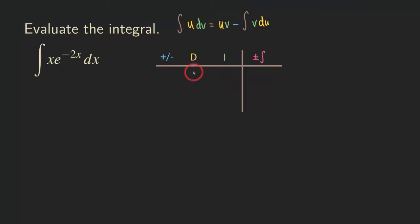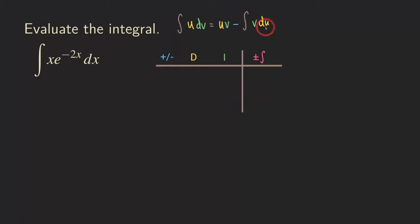Going back to the table, we have the D column, which is our u, and then the I column, which is our dv. That plus-or-minus sign in the first column tells you that you are going to alternate the signs. That's due to the minus sign in front of the integral in the formula. Sometimes we need to do integration by parts multiple times, and when we distribute this minus sign, the signs alternate. That's why we put plus, minus, plus, minus as we go down the table.